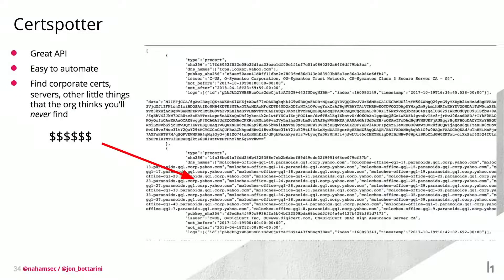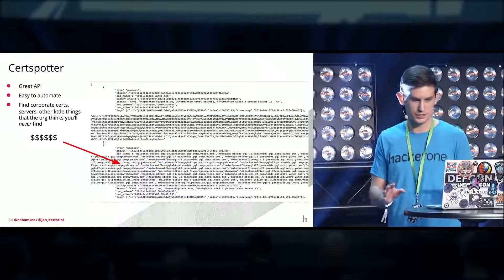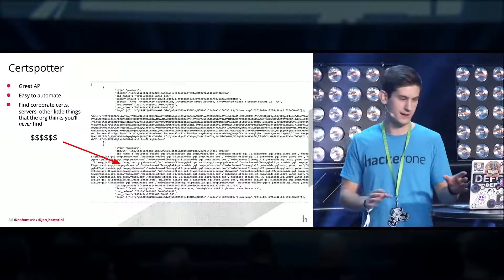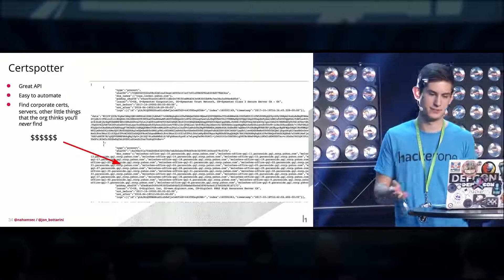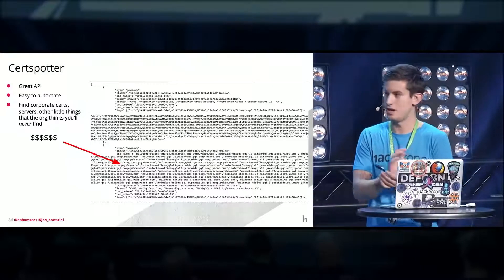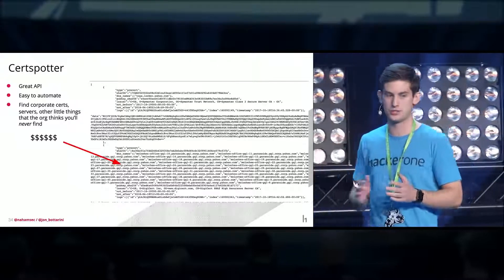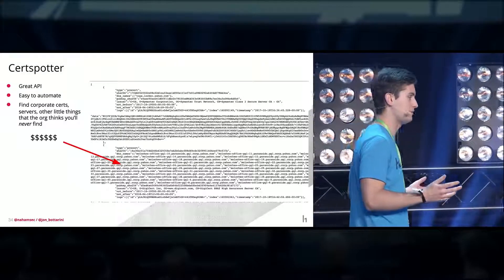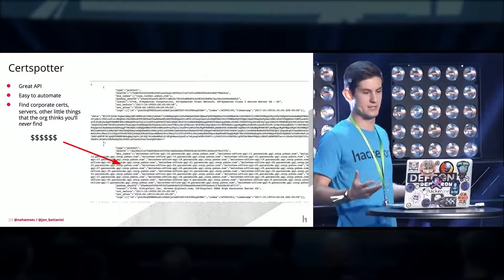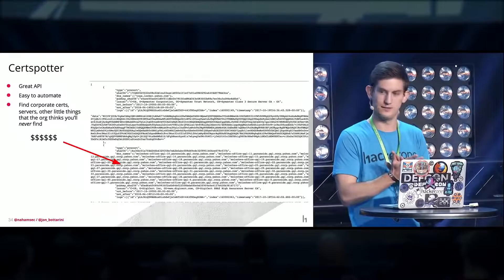CertSpotter does something similar, but the really great thing about CertSpotter is its excellent API. If you'd rather just pull everything related to a domain or URL, use CertSpotter — it's really fast. You can find corporate certificates, servers, and other little things you'd think the organization would never think you'd find. As an example, this is pretty much every single internal Yahoo IP, all publicly available because they use the same corporate certificate for their public certs. I got my start hacking on Yahoo not because they had bad security, but because their scope is so big with so much potential to find things.